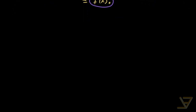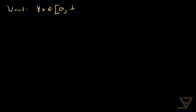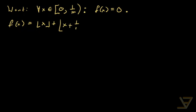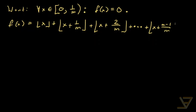That allows us to focus on a particular interval. What we want to show now is that for all x in the half-open interval from 0 to 1 over m, f(x) is identically 0. Let me rewrite the function: we have the floor of x plus the floor of x plus 1 over m, plus the floor of x plus 2 over m, all the way through to the floor of x plus (m minus 1) over m, minus the floor of mx. Miraculously, each of these terms individually equals 0 on this interval.